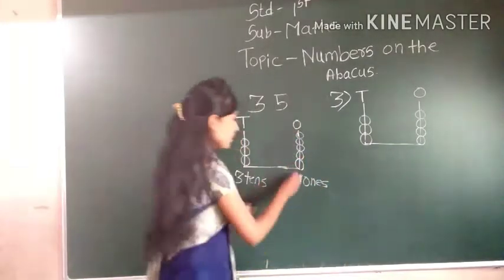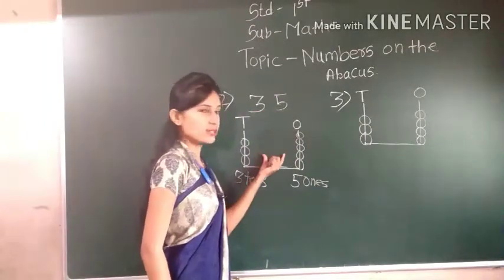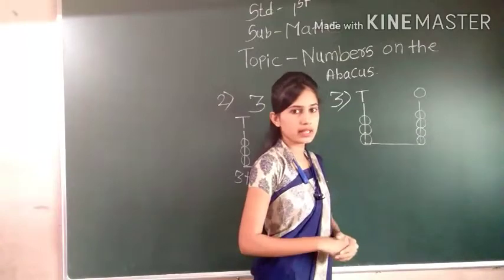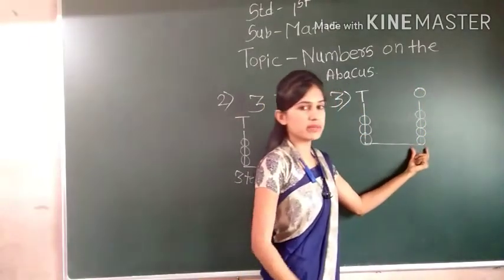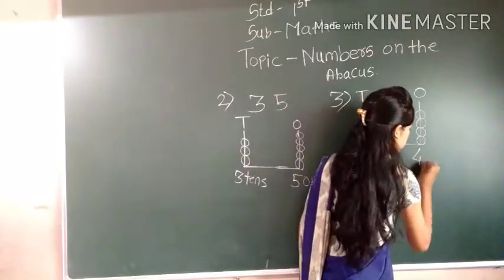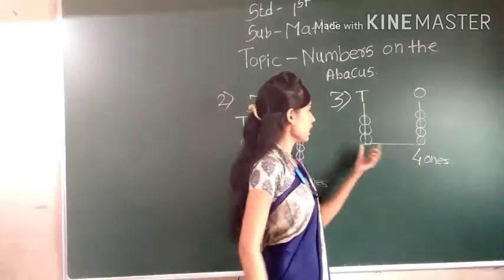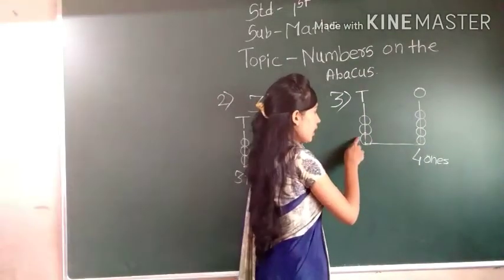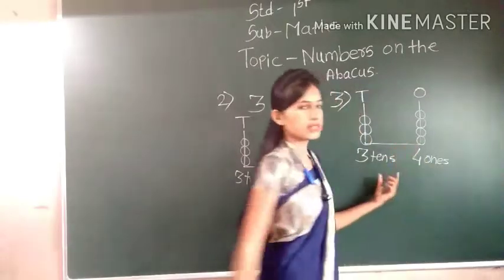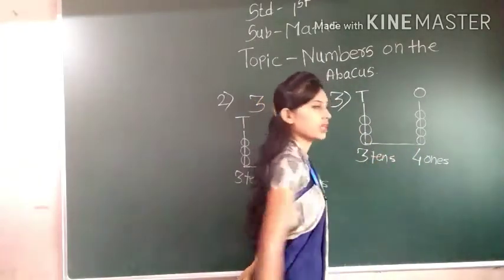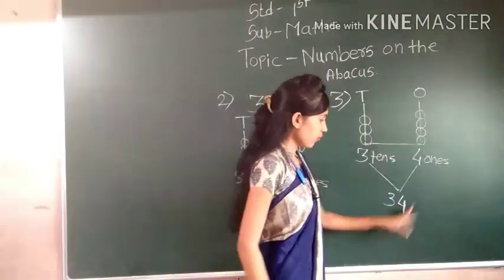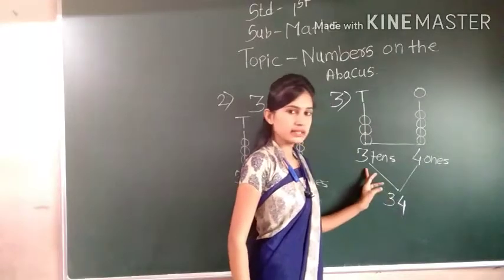See here. Here we have to draw three bits. So students, at one's place, how many bits are here? Let's count: one, two, three, four. Four bits — we write four ones. And here at ten's place, let's count: one, two, three. Three bits — we write three tens. Students, tell me which number is formed. Thirty-four. The number formed is thirty-four. Four ones, three tens.